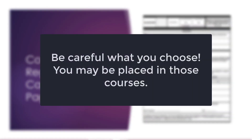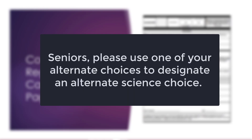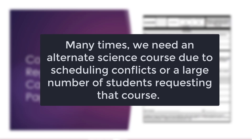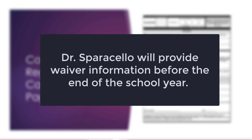Do not register for academy courses if you have not currently been accepted to that academy. Listing alternative courses is mandatory, not optional; however, be careful what you choose because you may be placed in those courses. For students on the multidisciplinary endorsement, this is especially important, as students in the endorsement will be given first choice in electives of that area. Seniors, please use one of your alternate choices to designate an alternate science choice, as we often need an alternate due to scheduling conflicts. Waivers are not available during registration and you must sign up for 7 courses. Dr. Sparacello will provide waiver information before the end of the school year. Lastly, please sign your registration card and date it.